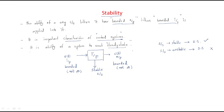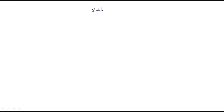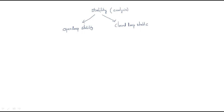In control systems, stability can be defined into two types. The first is open loop stability, and the second is closed loop stability. To analyze the stability of a system, we should go for two things: testing for open loop stability and testing for closed loop stability.